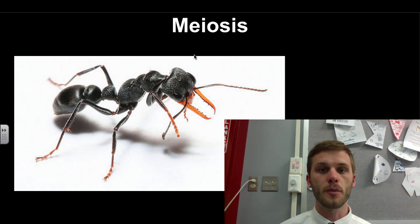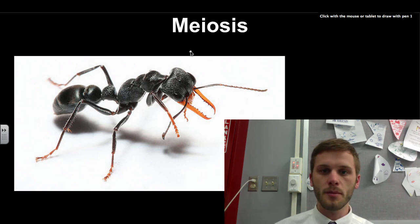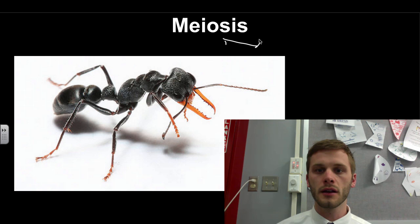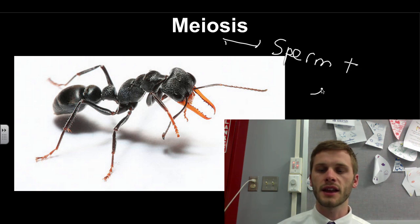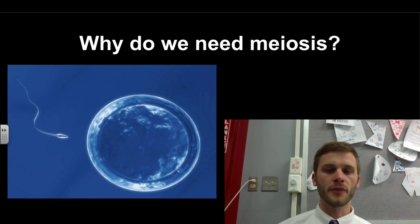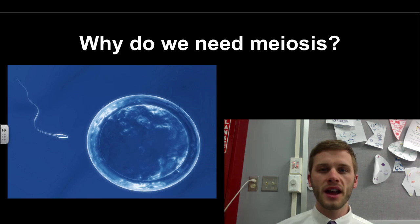So meiosis is really about how we make sperm and egg. Today we're going to learn that process. Okay, first thing right here: why do we need meiosis? Meiosis is really important in a couple of ways. First of all, we know it creates sperm, which is right here, and eggs.